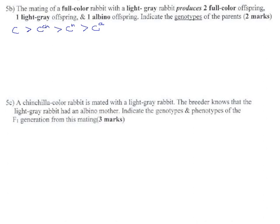So they tell us about two parents, one full color and one light gray. Full color crossed with light gray. And from that they tell us the offspring are full color, light gray, and in one case albino. And from that we're supposed to fill in as much as we can.